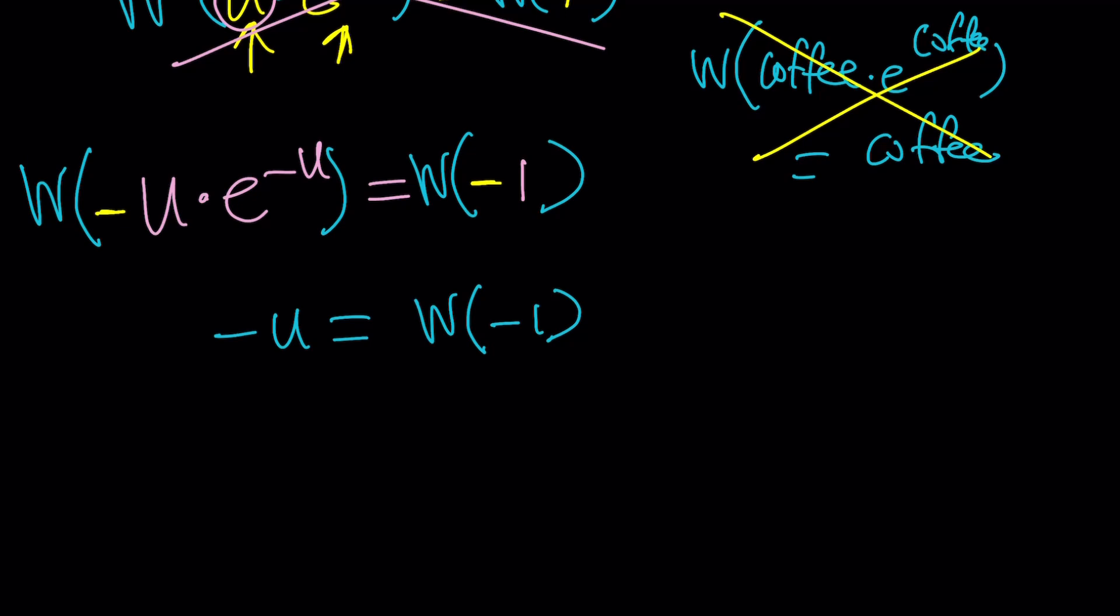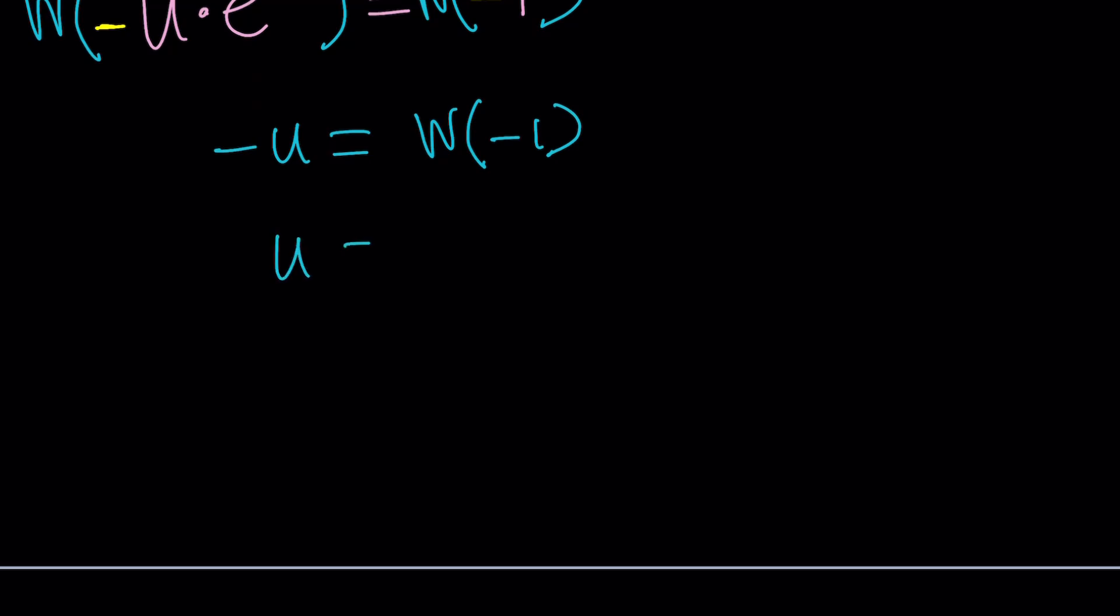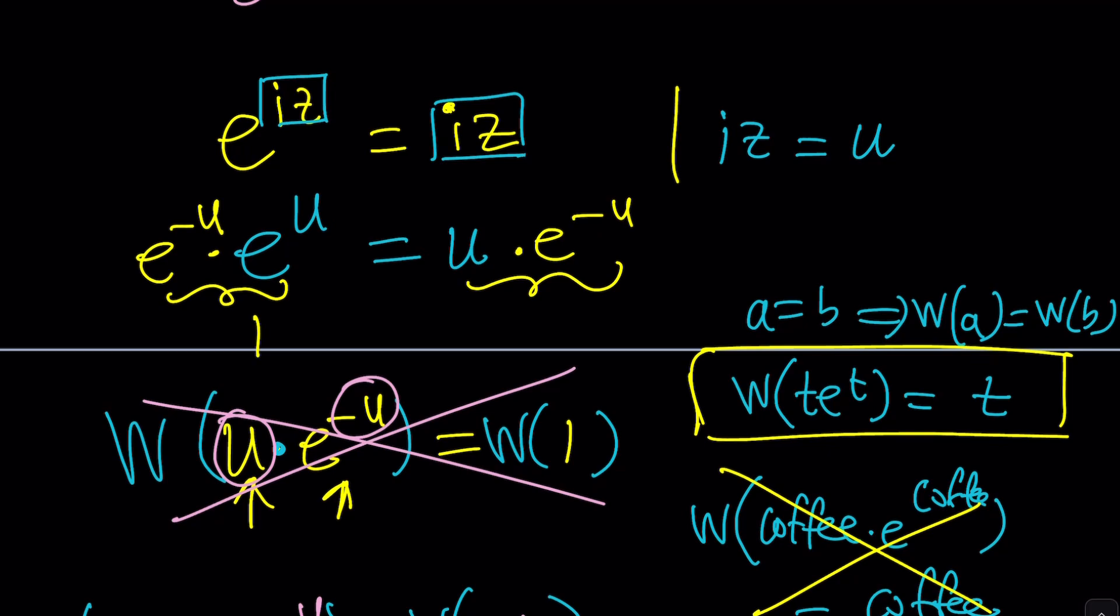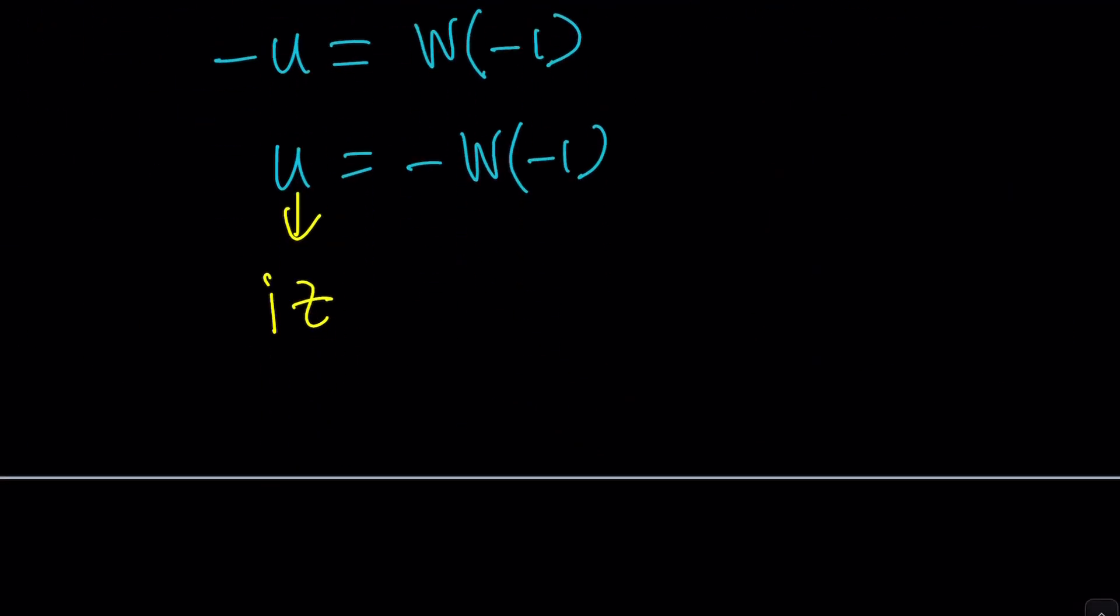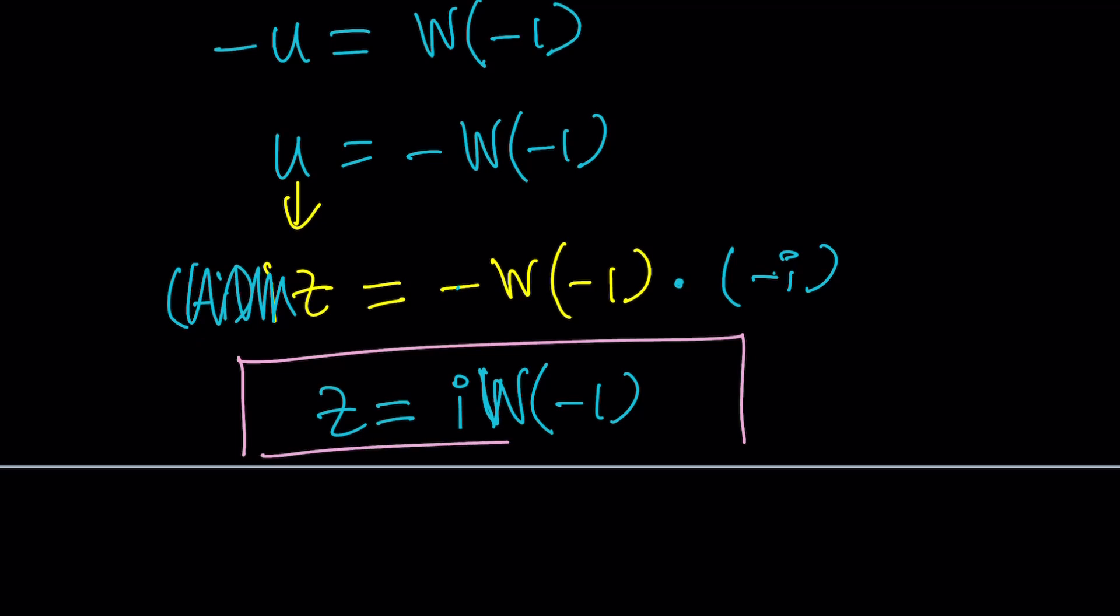Let's replace u with something. First, let's multiply both sides by negative 1. That's going to give us u equals negative W of negative 1. And then, at this point, let's replace u with iz. Because remember, u is iz. So now iz becomes negative W of negative 1. And then at this point, we're going to do mathematics one more time. Multiply both sides by negative i. And this is going to give you a positive 1. And z from here is going to be i times W of negative 1. Awesome. We were able to write z in terms of Lambert's W function, which is fine.